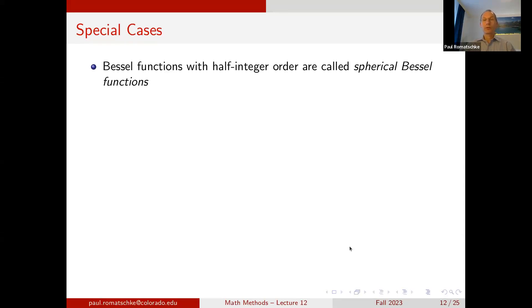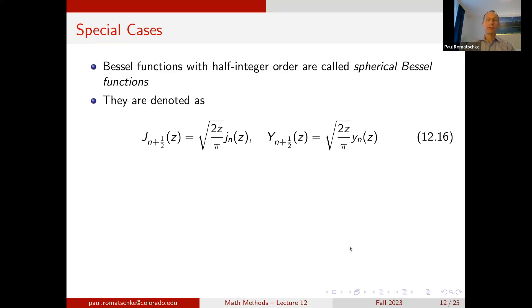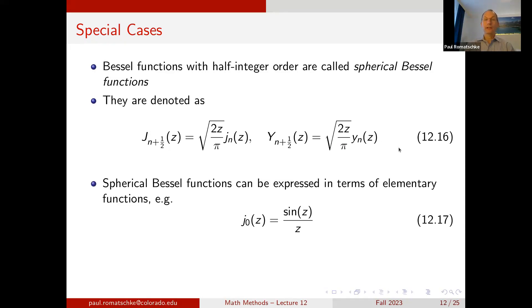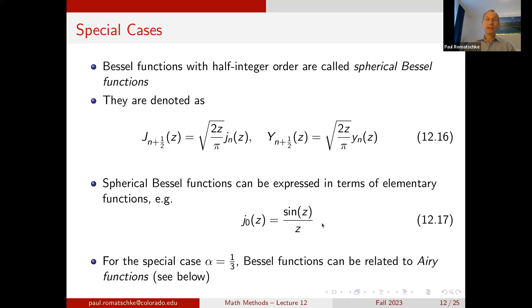Bessel functions of half-integer order are also called spherical Bessel functions. If we take J of half-integer order n+1/2, we denote the corresponding function as √(2z/π) times little j_n, the spherical Bessel function, and similarly Y_{n+1/2} is related to spherical Bessel y_n. These spherical Bessel functions can be expressed in terms of elementary functions: for instance, j_0(z) = sin(z)/z, also known as the sinc function. For order α = 1/3, Bessel functions can be related to the Airy functions, discussed below.